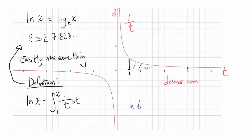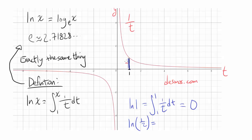Natural log of 1 is the integral from 1 to 1 of 1 over t, dt — this has no area, so natural log of 1 is 0. What about natural log of 1/2? In this case you're going backwards, from 1 to 1/2. When you go backwards with a positive area, you reverse the sign — the definite integral's sign is reversed, so this turns out to be negative. Natural log of 1/4 gives an even more negative area.